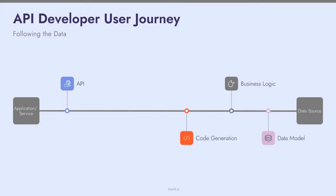Only after establishing the data model do you build the business logic on top of it — there has to be business or customer value attached to the APIs, otherwise there's no point. After that comes code generation, which is what developers are paid for. And the journey doesn't stop there: you then deploy the API — there are many deployment paradigms today — and then think about security and protection, ensuring the API is up, running well, and serving users reliably.